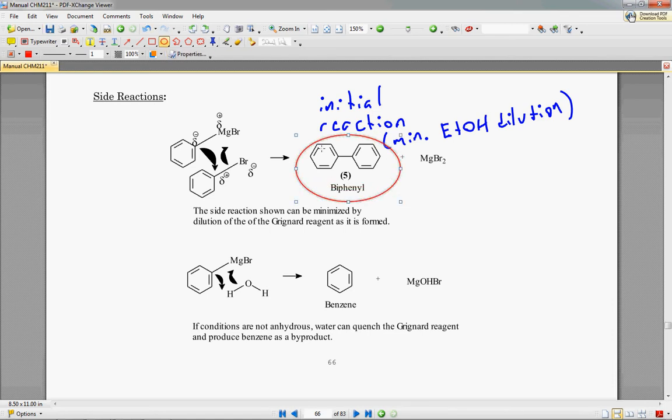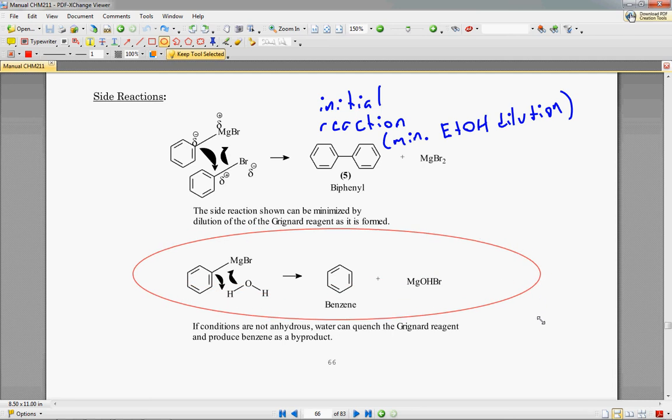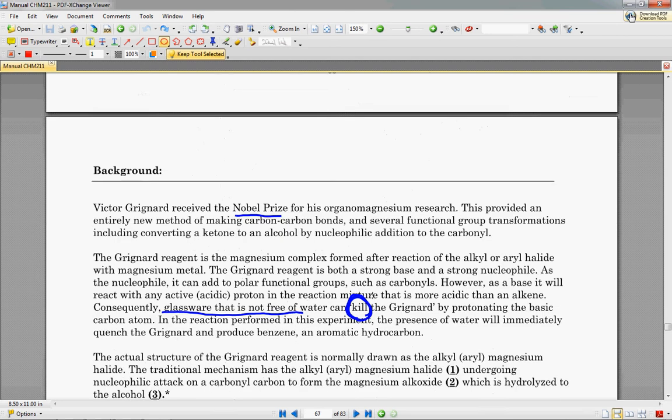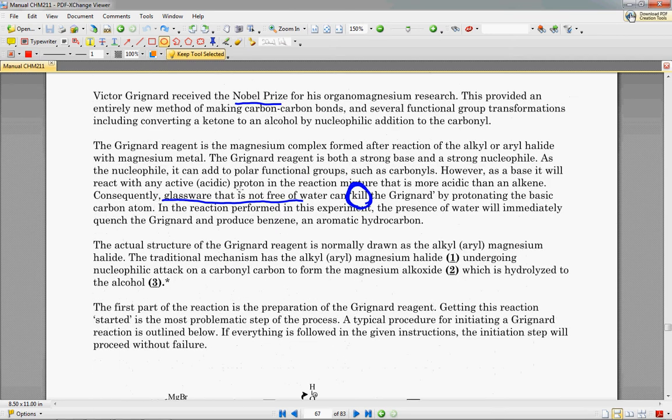So, one of the side reactions that can occur is this biphenyl production. So, that's why we need to add a lot of extra ether once that reaction occurs, and that's in the procedures. So, don't worry about remembering that too much. And then, if there's any sort of contact with water or with any other hydrogen or proton donator, you're going to get a benzene ring, which is completely unreactive and ruins your reaction.